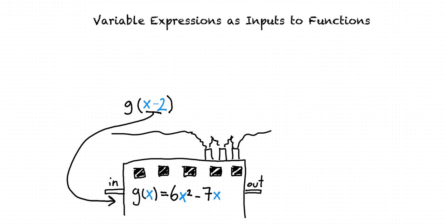And then everywhere where we see an x in our function, we replace that with x minus 2. So in this case, it becomes 6 times (x minus 2) squared minus 7 times (x minus 2).